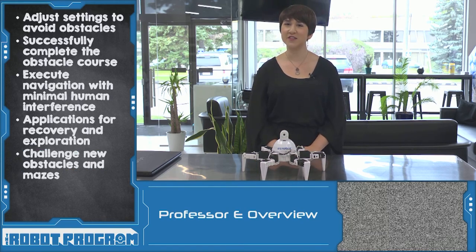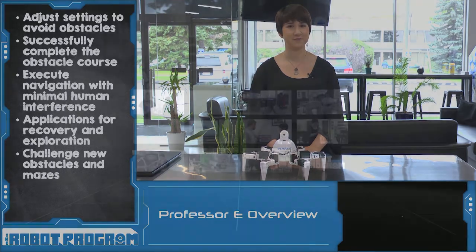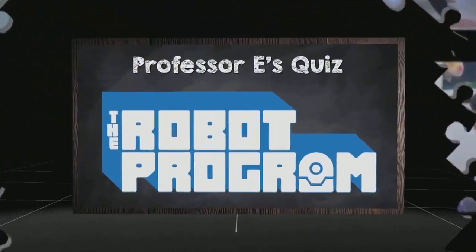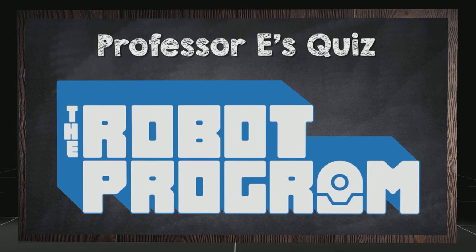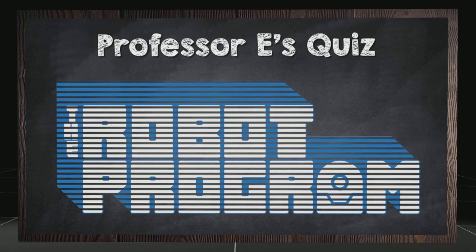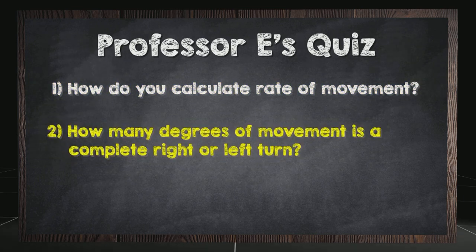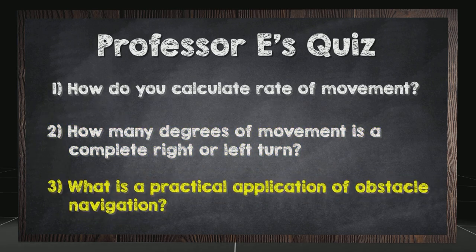Once you've completed this activity and learned how to navigate around obstacles, you can use this information for your other robot program activities. Thanks for watching this episode and we'll see you next time. How do you calculate rate of movement? How many degrees of movement is a complete right or left turn? What is the practical application of obstacle navigation?